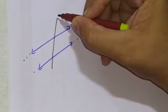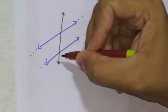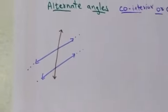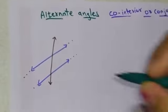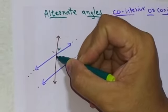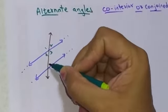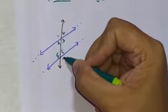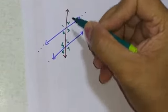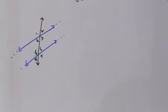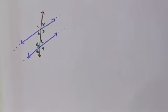A line in between the parallel lines is the transversal. Now, because of this transversal, many angles are formed. Let us name those angles as 1, 2, 3, 4, 5, 6, 7, and 8. These angles form the pair of corresponding angles, pair of alternate angles, and also the pair of co-interior or conjoined or allied angles.